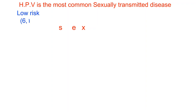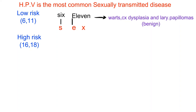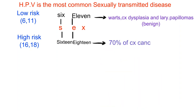HPV is classified as low-risk and high-risk. Low-risk types 6 and 11 — S-letter for 6 and E-letter for 11 — are responsible for anogenital warts, cervical dysplasia, and laryngeal papillomas, usually benign. High-risk types 16 and 18 — S-letter for 16 and E-letter for 18 — are responsible for 70% of cervical cancer: type 16 causes 50% of cases, type 18 causes 20% of cases.